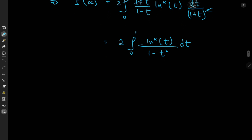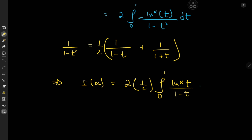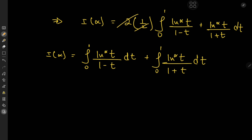The partial fraction decomposition is pretty easy. We take 1 over (1 minus t squared) and factor the denominator, giving us a factor of (1 minus t) and (1 plus t) with a coefficient of 1 half each to balance things out. This implies that I(α) equals the integral from 0 to 1 of log to the alpha of t over (1 minus t) plus log to the alpha of t over (1 plus t) dt, where the factor of 2 times 1 half cancels out. We now have a couple of standard integrals to evaluate.